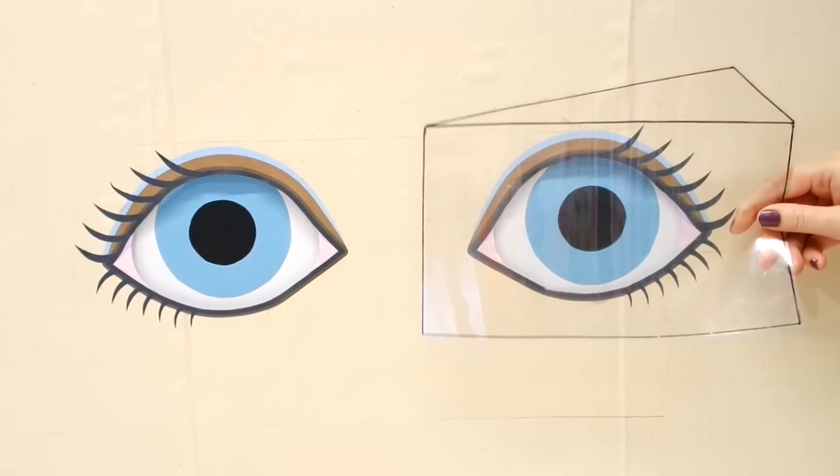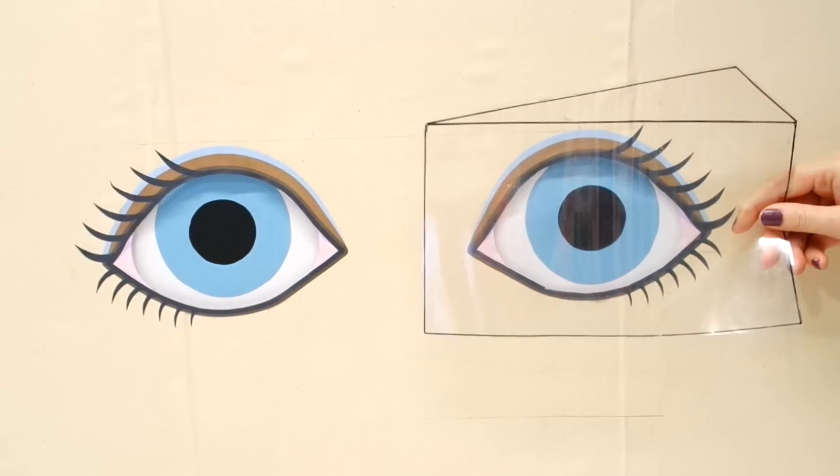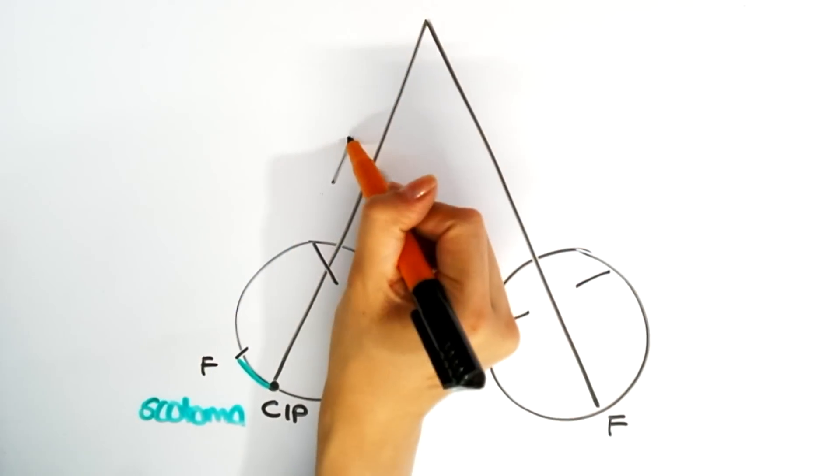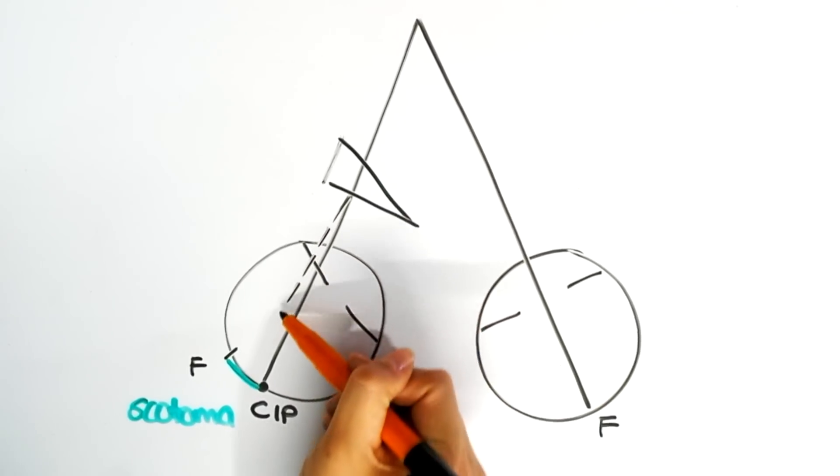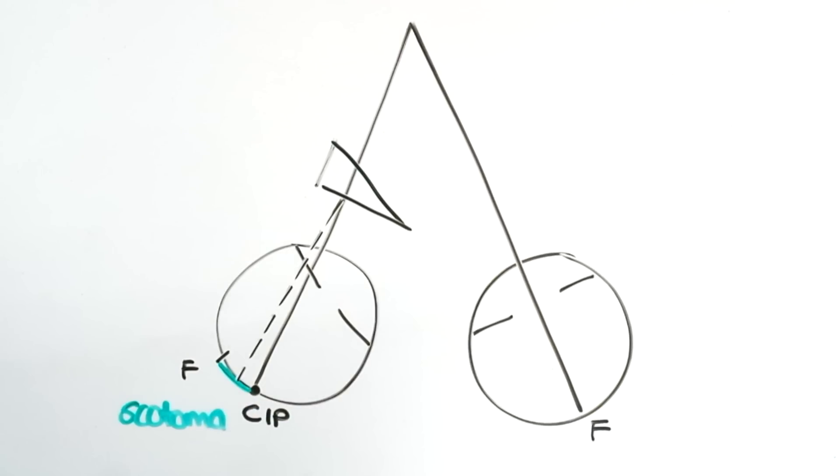When we place the prism on the deviating eye you will see no movement from either eye. We don't see movement here as the prism just moves the image onto the suppression scotoma. Therefore, there is no drive for the other eye to make that conjugate movement.